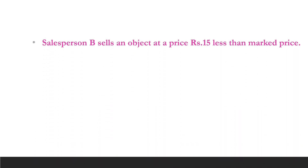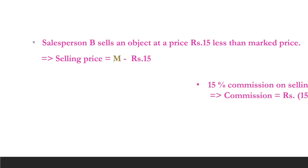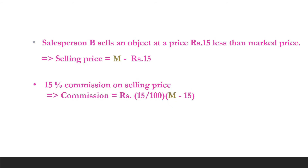Now, let us consider the case of Salesperson B. It is given that Salesperson B sells an object at a price Rs 15 less than the marked price. Therefore, the selling price is equal to M minus 15. It is also given that he receives 15% commission on the selling price. Therefore, commission is equal to 15% of (M minus 15).